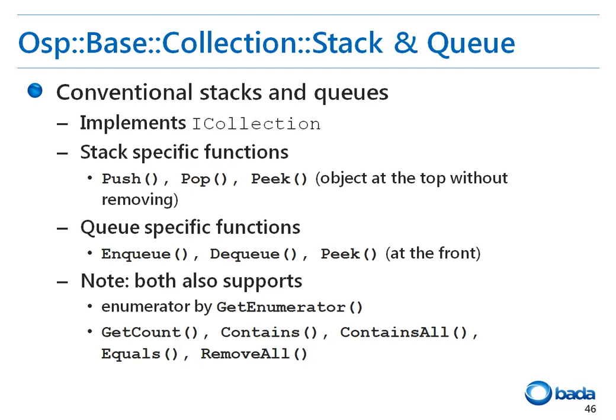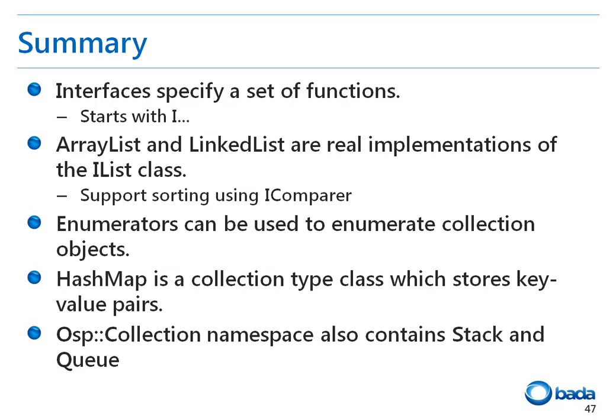In this lecture, I introduced interfaces. Bada interfaces are classes starting with 'i' and have virtual functions. The ArrayList and LinkedList classes are created by implementing the iList interface, and each supports sorting using the iCompare interface. All collection objects can get an item using the enumerator class. A HashMap is a collection type class to save key-value pairs. Finally, the OSP collection namespace also provides the stack and queue classes.